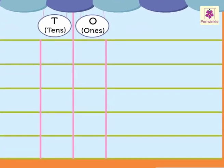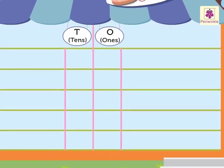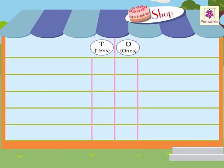Look at the number 10. Number 10 has one ten and zero ones. We can write it as: 10 is equal to one ten plus zero ones. Now let's see how the numbers 10 to 19 are written in the place value chart.